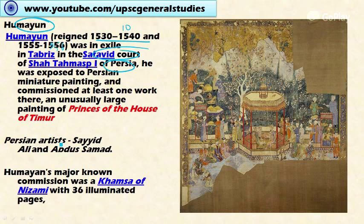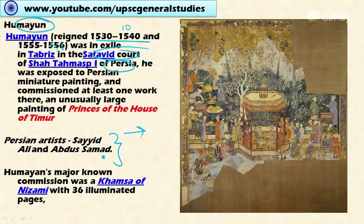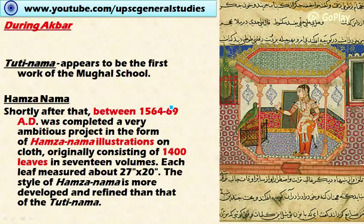While in exile in Persia, Humayun was inspired by Persian miniature painting and commissioned an unusually large painting — the 'Princes of the House of Timur'. When he returned to India he brought two Persian artists, Abd al-Samad and Mir Sayyid Ali, who introduced Persian elements into the Mughal school of painting. His major work commissioned in India was the Khamsa of Nizami, which contains 36 paintings.